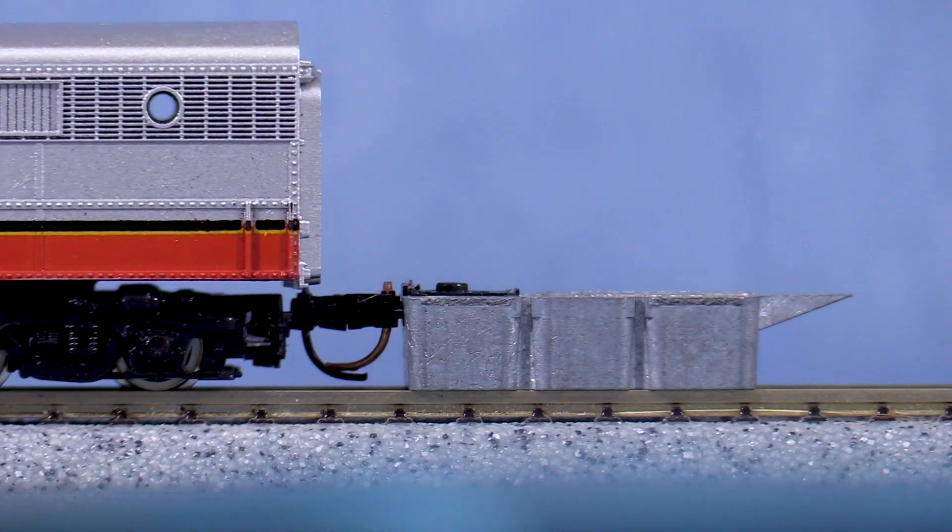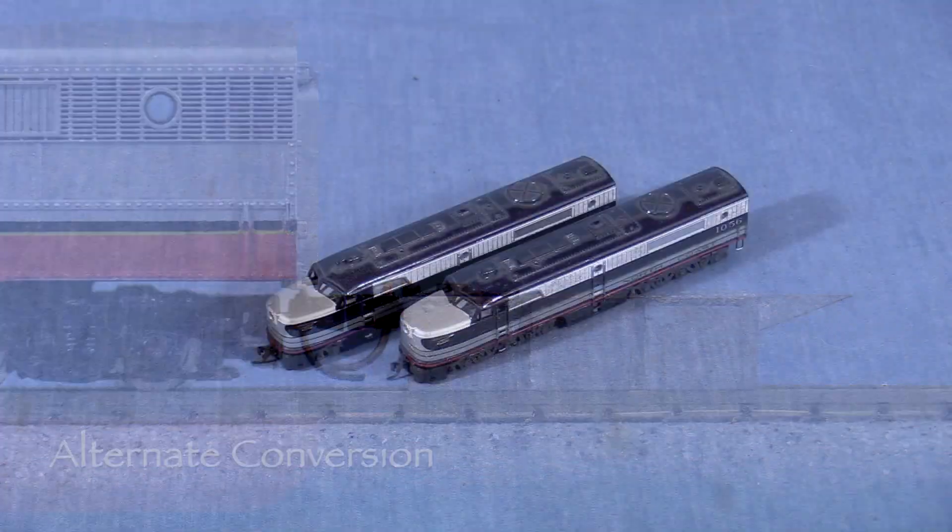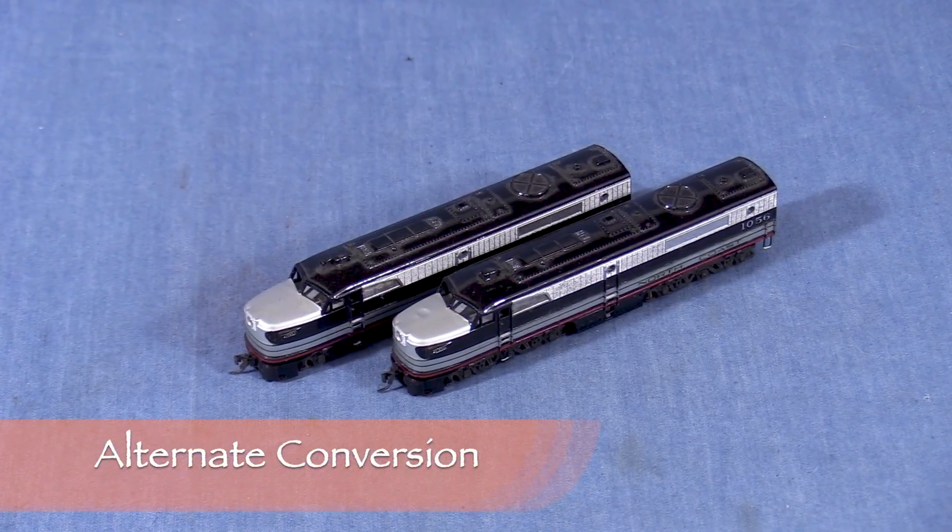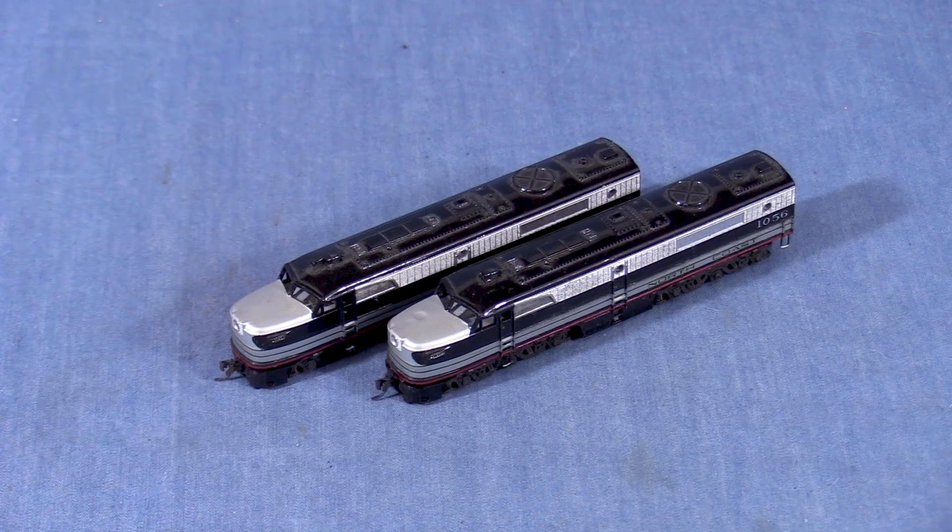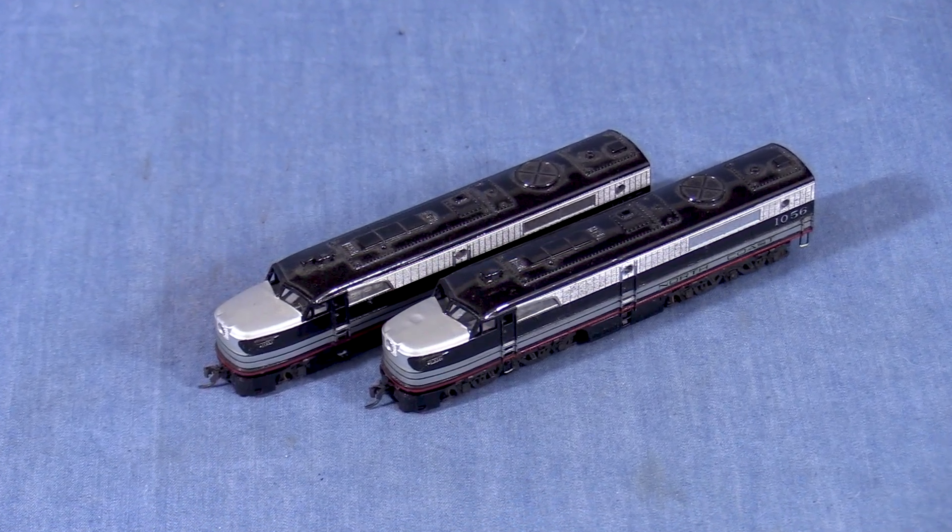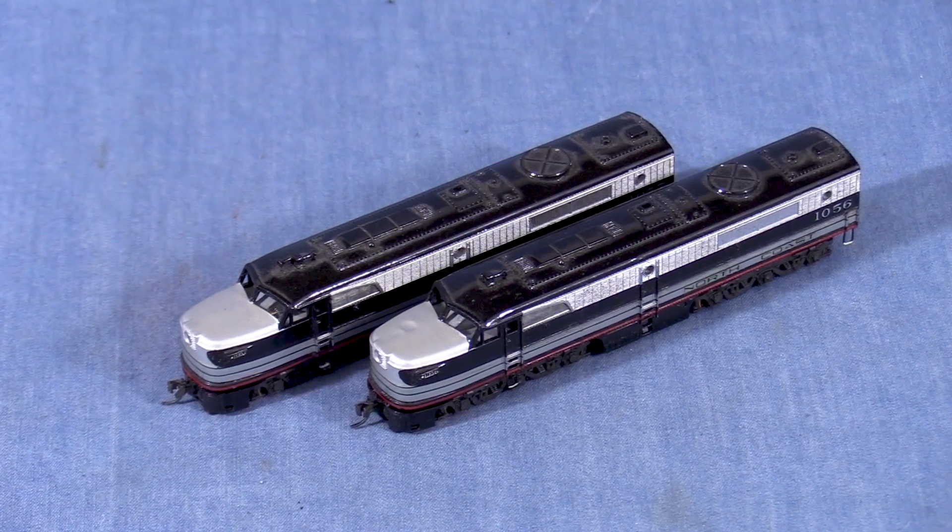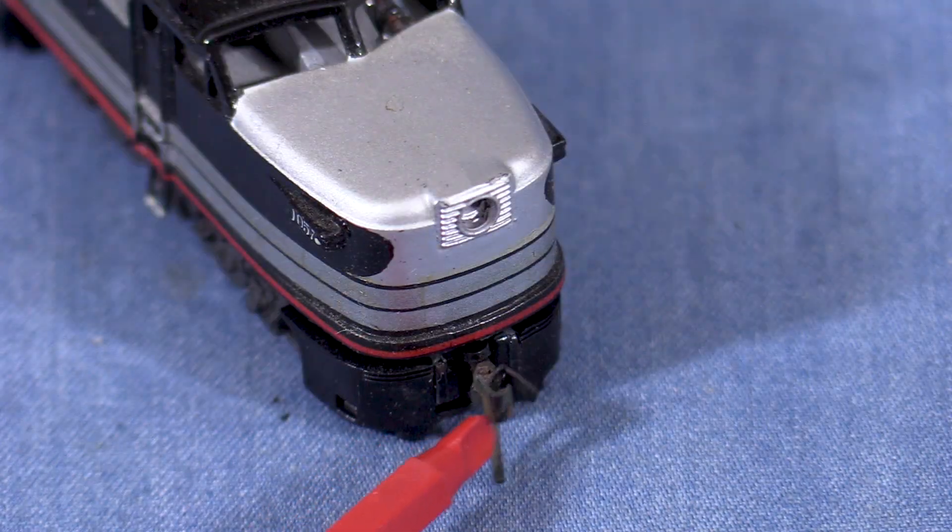I've put the B unit back together and the couplers are close to the correct height. Back in the day, Katie used to make a conversion kit for the Concours PA-1. I used them on my two North Coast units that I painted in the 80s. Finding one of these conversion kits used might be a challenge, but it's another possibility. The front couplers on my units don't stick out so much.